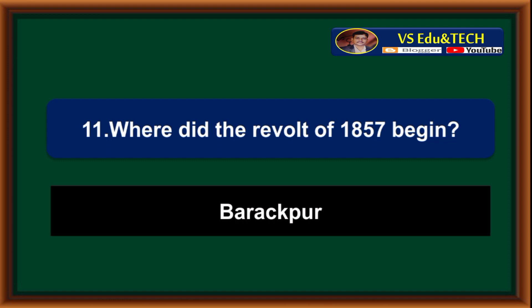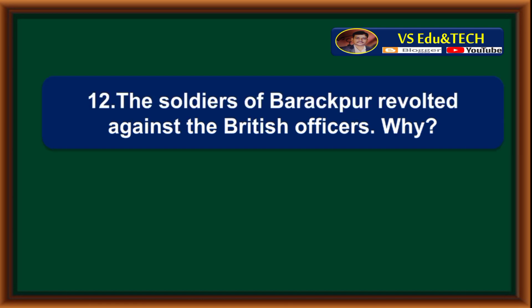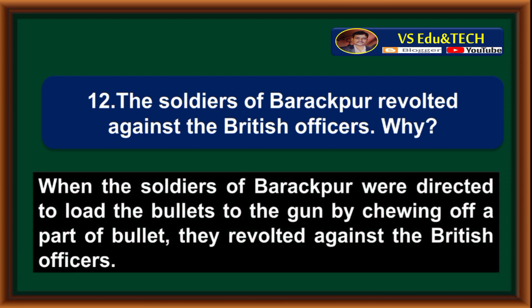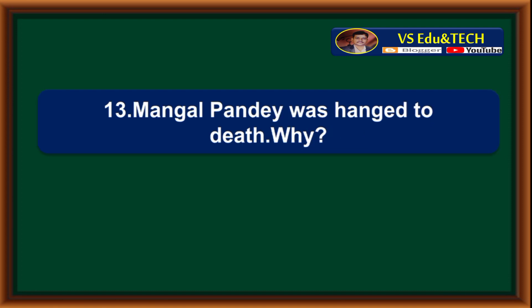Where did the revolt of 1857 begin? The revolt of 1857 began in Barrackpore. The soldiers of Barrackpore revolted against the British officers when they were directed to load the bullets into the gun by chewing off a part of the bullet.